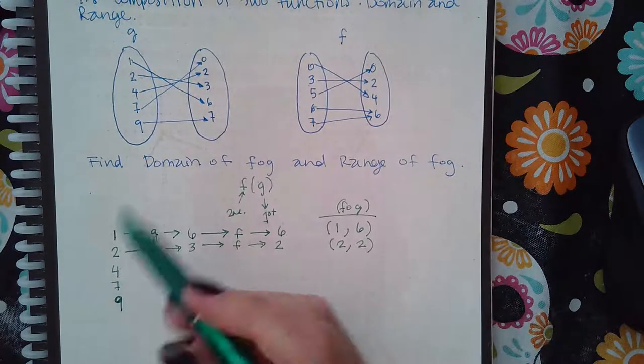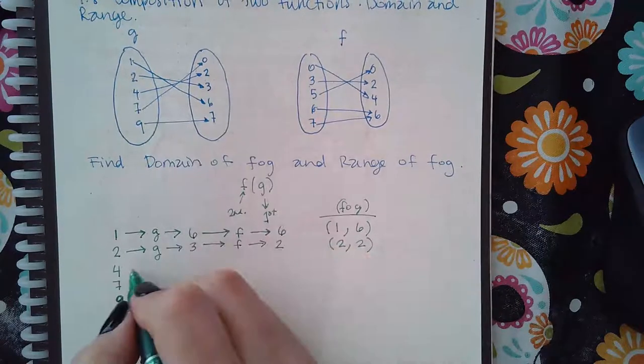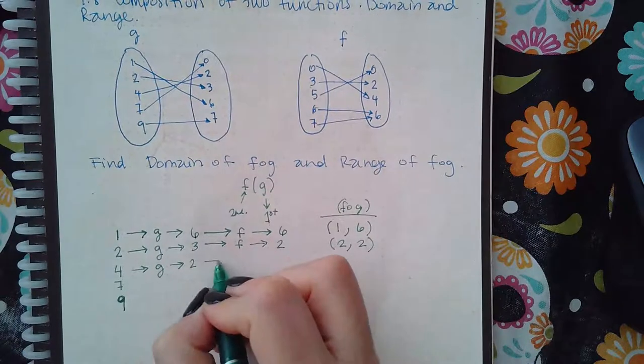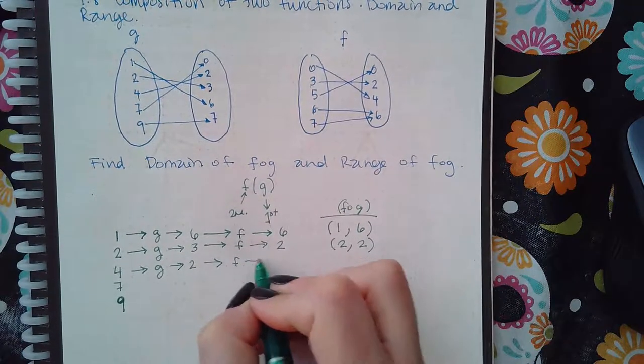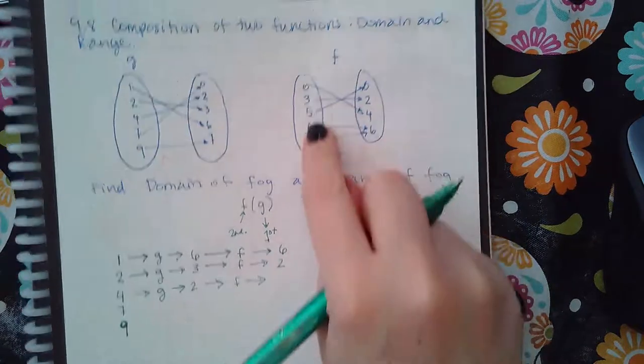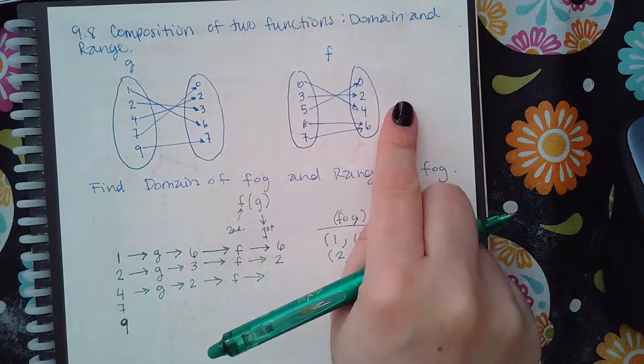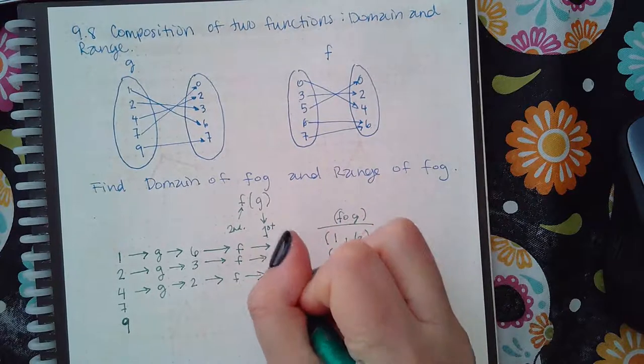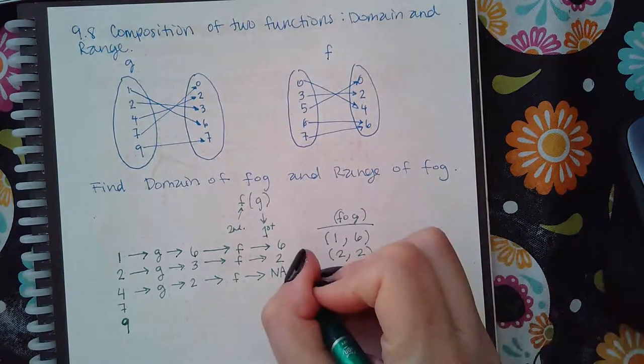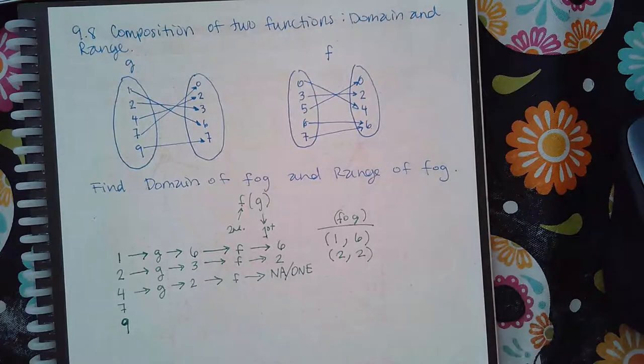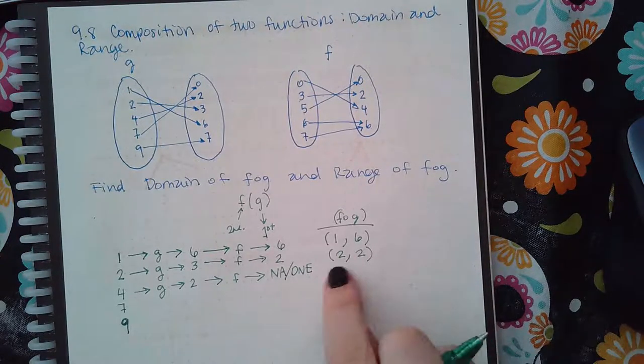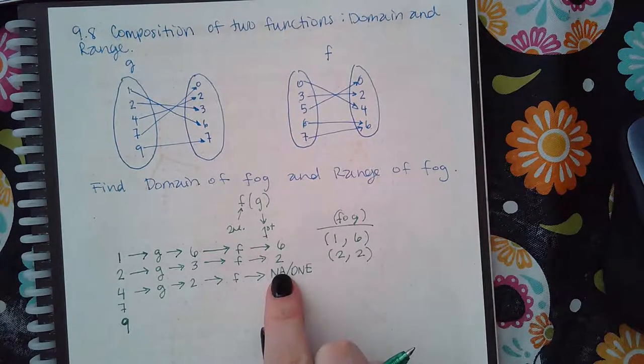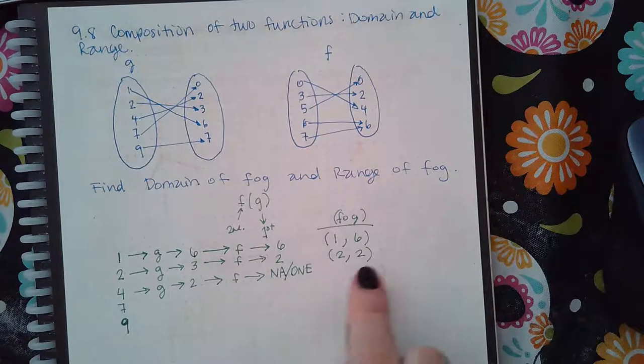Now let's move on to four. So four, when I plug it into g I will get the value two, and then two when I plug it into f, there's no two to plug in. So since there's no two to plug in, this doesn't exist, it's not applicable or you can say does not exist. So I'm not going to have a pair for that because I plugged in a four but I didn't get anything at the end.